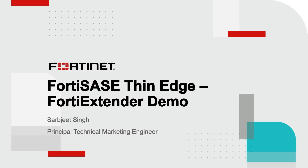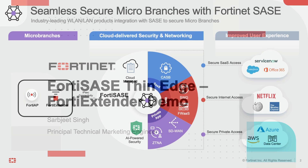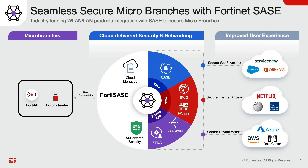Hello everyone. In this video, we will dive into the 4D SASE thin edge use case to onboard micro branches as a LAN extension of 4D SASE. 4D SASE thin edge extends security services to micro and small branches which do not have an on-prem security solution.